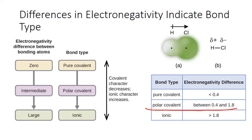That's where the name polar covalent comes from. Since the molecule is neutral overall, the hydrogen atom develops a partial positive charge to balance the negative on the chlorine. The Greek lowercase delta symbols used here are commonly used to indicate partial charge areas on a polar covalent bond — they mean just a partial separation, not a complete transfer of electrons. You can also draw an arrow pointing to the more electronegative atom to indicate this polarization and the direction of electron pull.